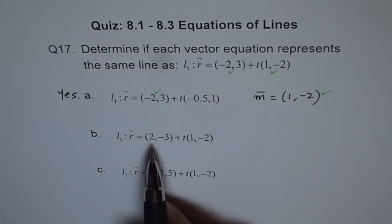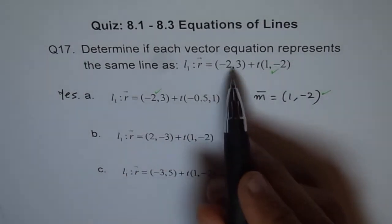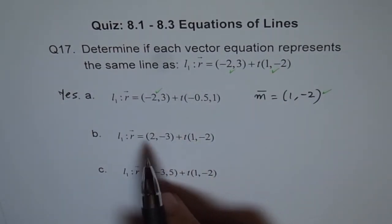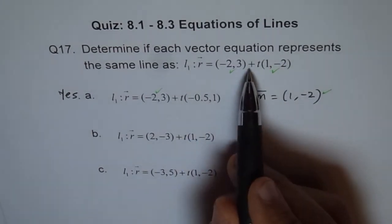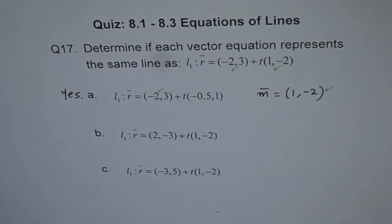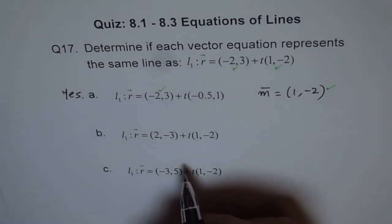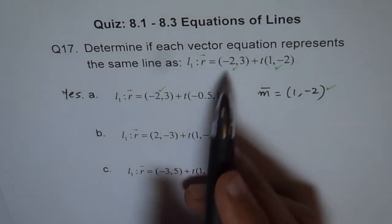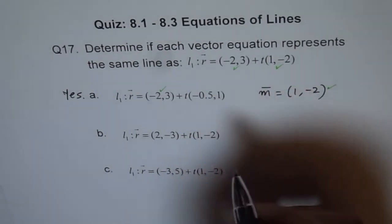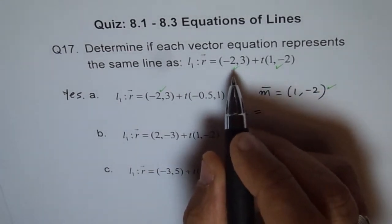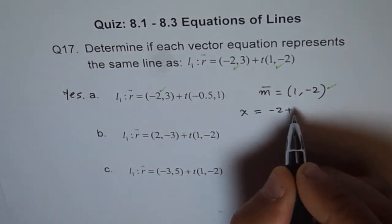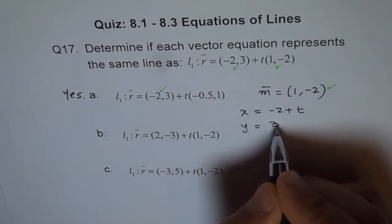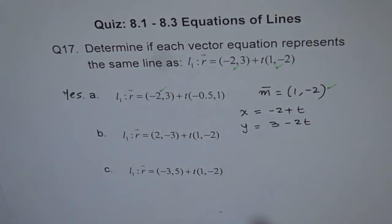Now this one, (2, -3), the point is not the same, but the direction vector is same. So now what we have to do is check if this point lies on our given equation or not. So let's check it. How are you going to check it? Best way to do it is to write this in the parametric form. So you can write this as x equals -2 plus t and y equals 3 minus 2t.